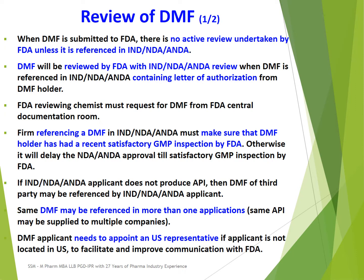When the FDA Reviewing Chemist starts the review of DMF, he will request the DMF from the FDA Central Documentation Room. The firm or company referencing a DMF in IND, NDA, or ANDA applications must make sure that the DMF holder has had a recent satisfactory GMP inspection by FDA; otherwise it will delay the NDA, IND, or generic application approval until there is a satisfactory GMP inspection. If an IND or generic applicant does not produce the API, then the DMF of a third party may be referenced by such applicant.